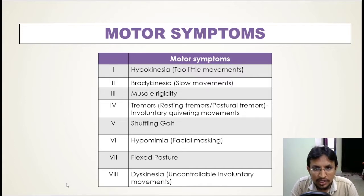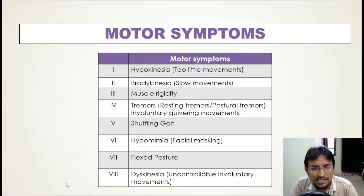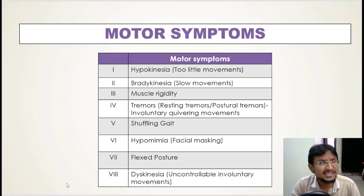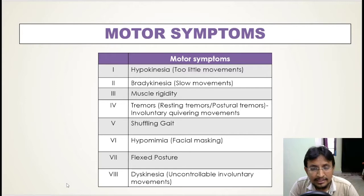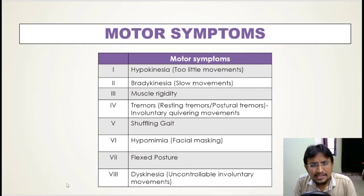The next motor symptom is muscle rigidity. If you try to move a patient's elbow — flex it, for example — it will be really difficult to move their joints because their muscles have tonic contractions, making them very rigid and resistant to movement. This type of muscle rigidity is called cogwheel rigidity.